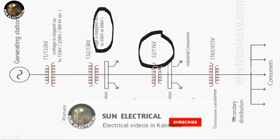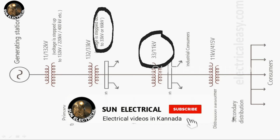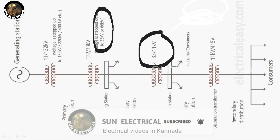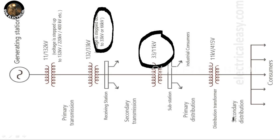At the secondary distribution substation, the 11kV power supply is converted to 440 volt line-to-line, or 230 volt phase-to-neutral, using a transformer.